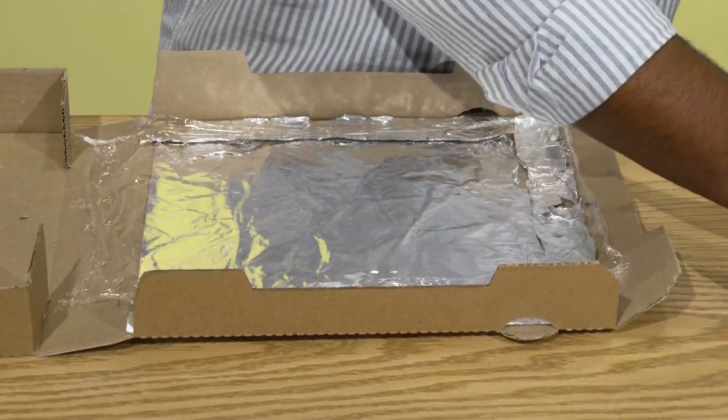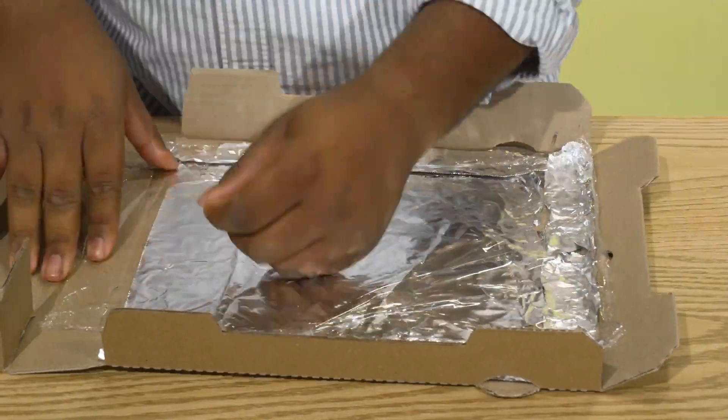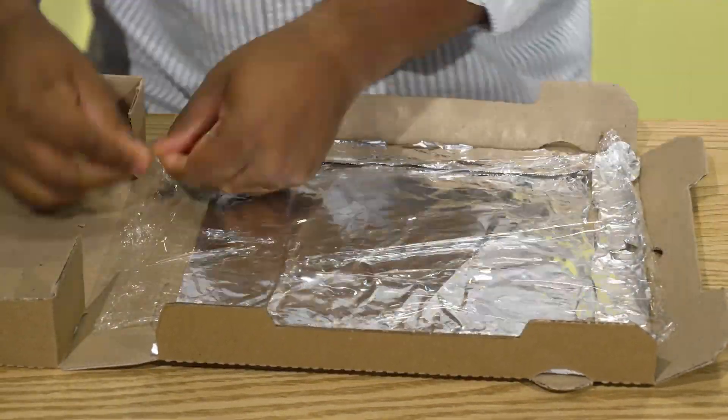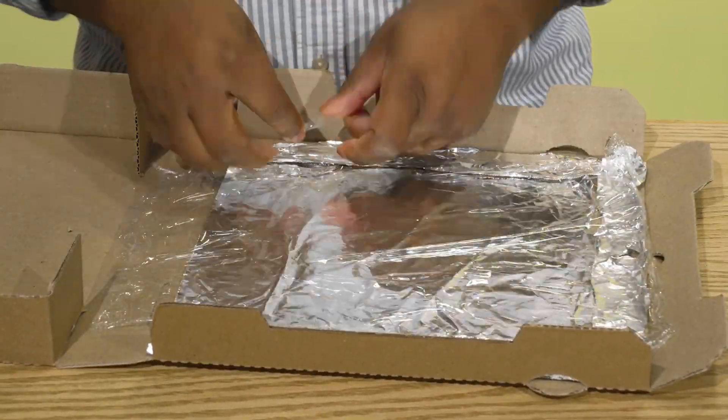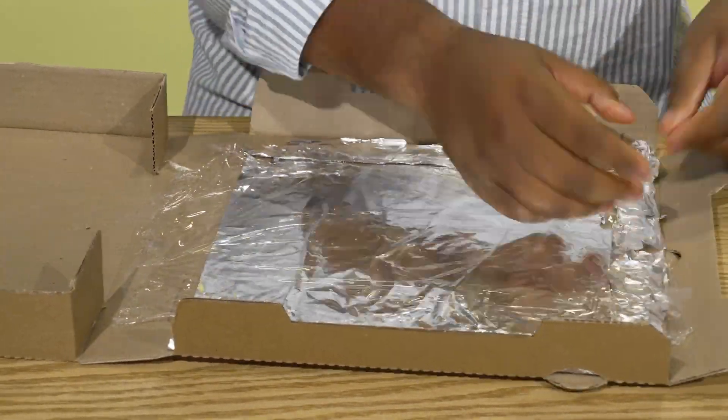Now cut a piece of clear colorless plastic wrap slightly larger than the flap you just cut. Open the box and tape or glue the plastic wrap over the opening on the inside of the lid. Make sure the plastic wrap is tight and secure.